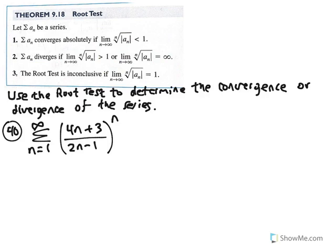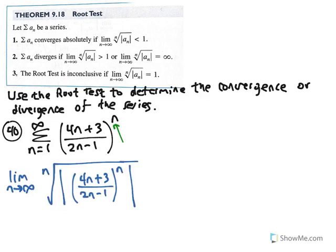Here we have number 40: use the root test to determine the convergence or divergence of the series. The root test works well here because the nth term has an nth power. We set up the limit as n approaches infinity of the nth root of the absolute value of the nth term. The first thing to note is whether the absolute value can be removed — if the terms are only positive, you don't need it.